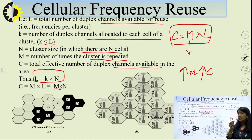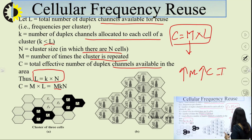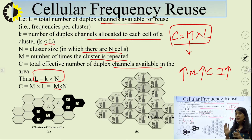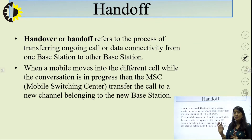However, there is a glitch — a trade-off between capacity enhancement and interference. If we increase cluster repetition, capacity increases, but at the same time interference also increases. Therefore, we can increase cluster repetition but must keep interference within limits.